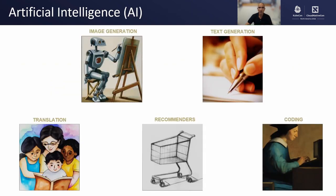Another example of compute intensive applications is artificial intelligence or AI. AI is probably the greatest revolution of our time. It allows computers to solve problems that only a few years ago seemed impossible. AI can create images and text from human description, translate languages, recommend specific items from a wealth of options, and even write code. AI is very common these days and used in many web services and other common applications.